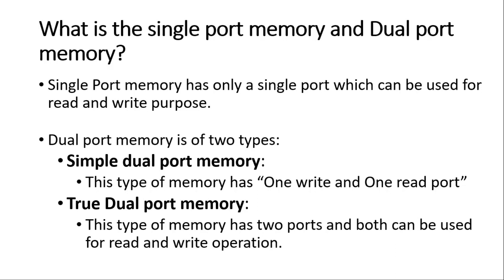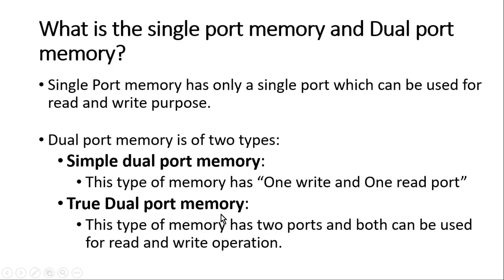Dual port memory has two types. The first type is called simple dual port memory, and the second type is true dual port memory. In simple dual port memory, one port is dedicatedly used to write into it and the other port is used to read from the memory. But in a true dual port memory, it has two ports and both ports can be used for both reading and writing operations.